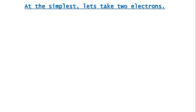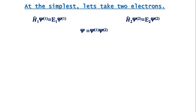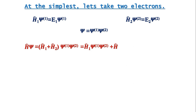Now it's time for an easy calculation. At the simplest, let's take two electrons only. These two electrons have Hamiltonians H1 ψ1 = E1 ψ1 and H2 ψ2 = E2 ψ2, where ψ1 is the wave function of the first electron and ψ2 is the wave function of the other. Now let's take a wave function ψ = ψ1 · ψ2, so ψ is the product of these two wave functions. Now let's see what H ψ is: H ψ = (H1 + H2) ψ1 ψ2 = H1 ψ1 ψ2 + H2 ψ1 ψ2. Since ψ1 is the eigenfunction of H1 and ψ2 is the eigenfunction of H2, we can treat ψ2 as a constant behind H1.